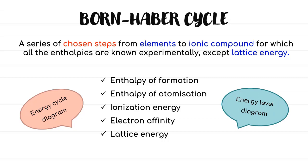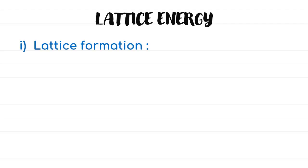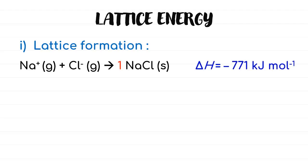We'll go through both representations using the same example. We've already heard about the term lattice energy before when learning about Hess's law. There are 2 types of lattice energy that we need to know. First is lattice formation, where energy is released when 1 mole of solid ionic compound is formed from its gaseous ions. Lattice formation will always have a negative value and will be used in the Born-Haber Cycle, as these cycles involve the formation of molecules.